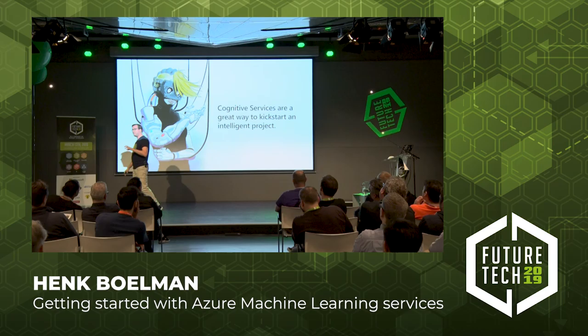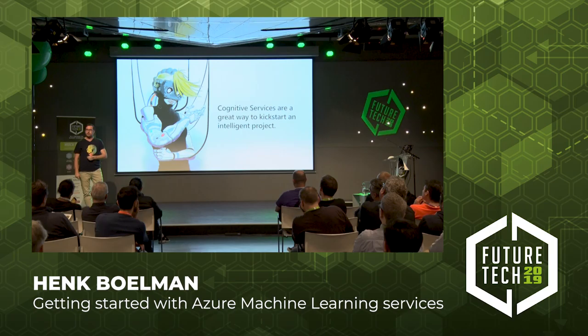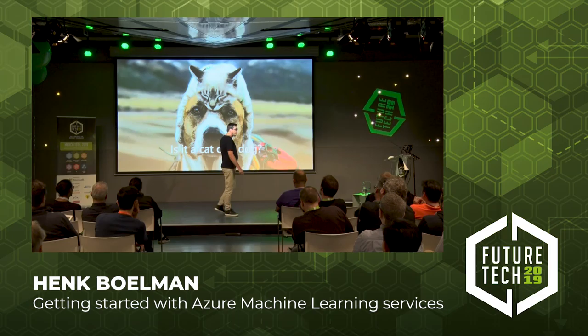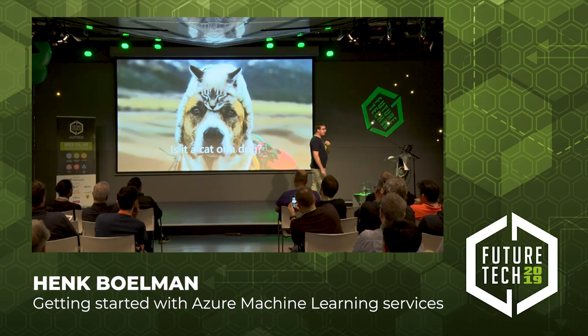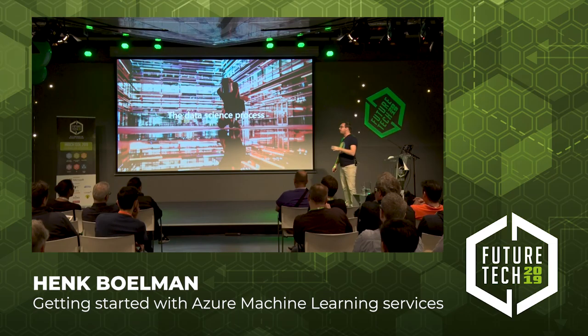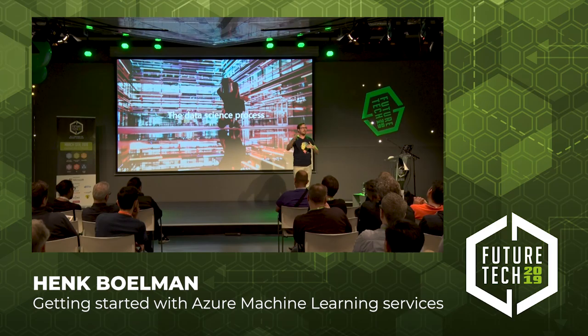If your boss asks you to do some machine learning or AI, first have a look if it's actually in the cognitive services stack. There are 42 of these services and you can really quickly make a POC to see if it works. But now back to a better question — a real-world question: is this a cat or is this a dog? And I'm going to show you how we can solve that using machine learning.